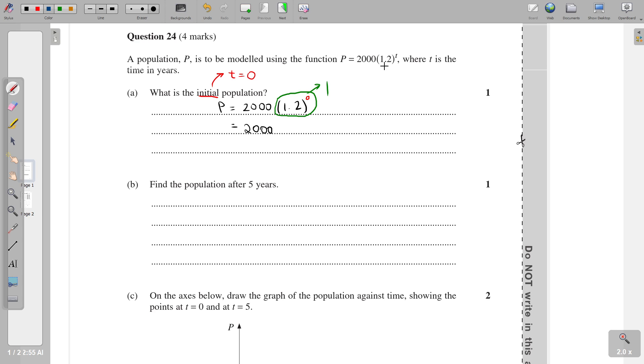So in general, the number you get here is almost always going to be the initial amount. Because again, when you take a power of zero, that always goes to one. And so it's like saying when no time has passed, you're just going to be left with this number at the front here.